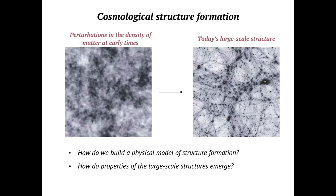I've been applying this to cosmological structure formation. Today's large-scale structure is basically a cosmic web where you have dark matter halos connected by filaments and surrounded by large voids. All of this complicated structure comes from tiny perturbations in the density of matter at early times that evolved through nonlinear gravitational evolution to form today's large-scale structure. The question I'm interested in is how can we build a physical model of structure formation given this very complicated nonlinear dynamics?